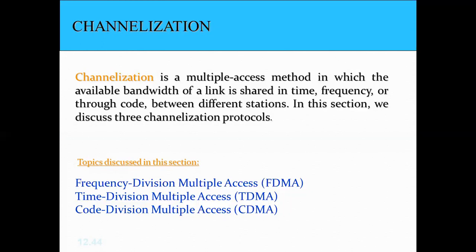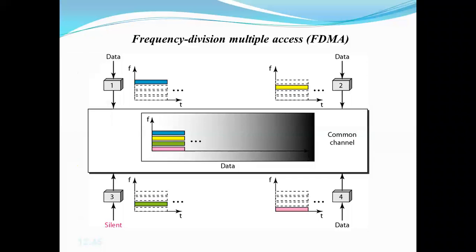Let's start with FDMA — Frequency Division Multiple Access. In FDMA, the available bandwidth is divided into different frequency bands, and each station is allocated a particular frequency band to send its data. Each band is reserved for a specific station and belongs to that station all the time. That particular station, if it wants to send data, must send data in that allocated frequency band only.